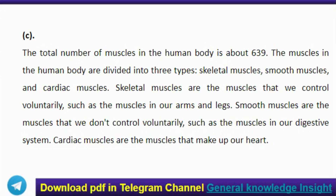Skeletal muscles are the muscles that we control voluntarily, such as muscles in our arms and legs. Smooth muscles are the muscles that we don't control voluntarily, such as muscles in our digestive system. Cardiac muscles are the muscles that make up our heart.